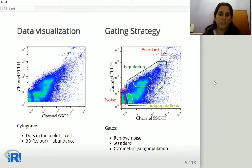We generate gates to remove noise and identify the standard and the cytometric population of interest and subpopulations.